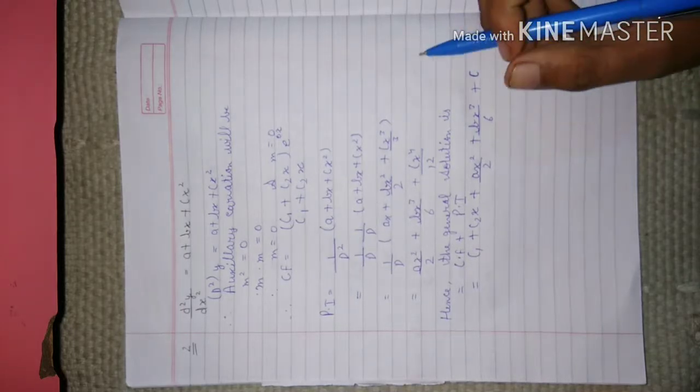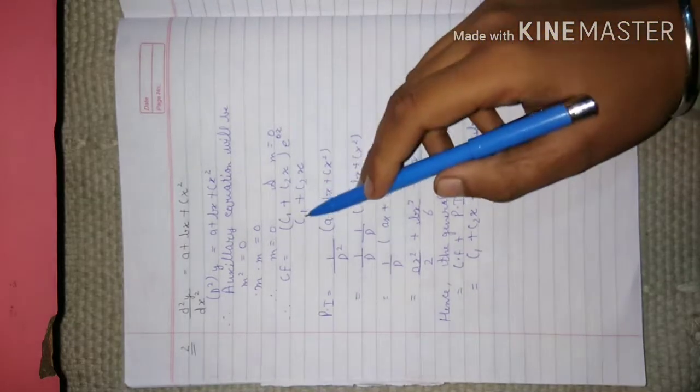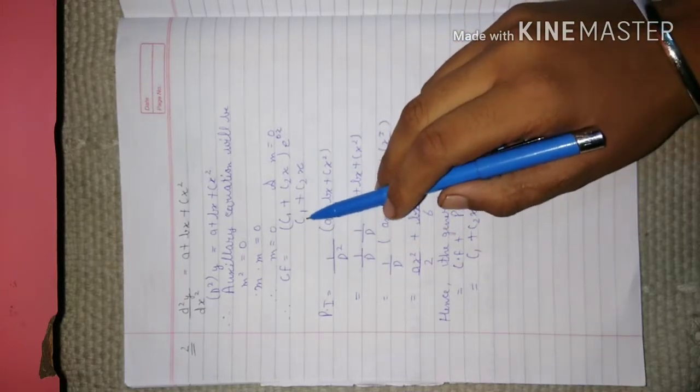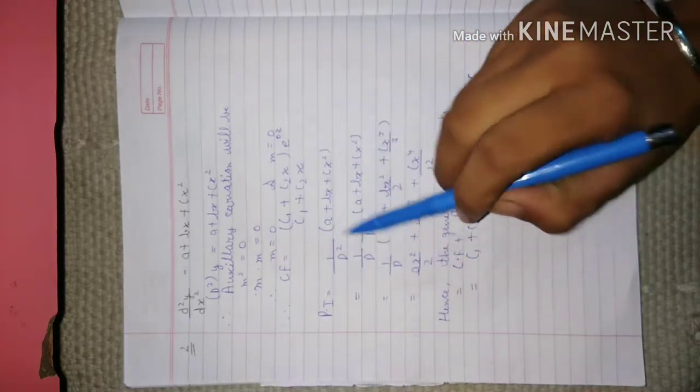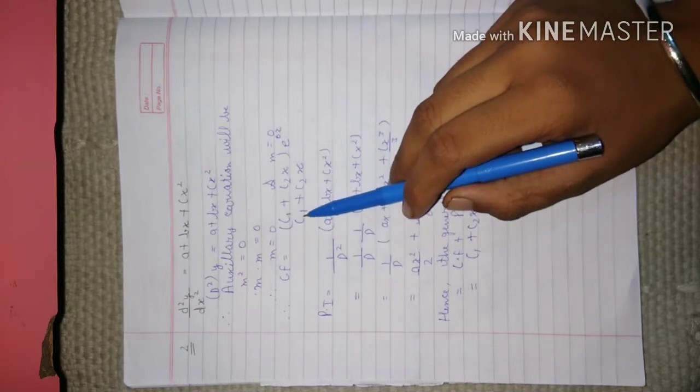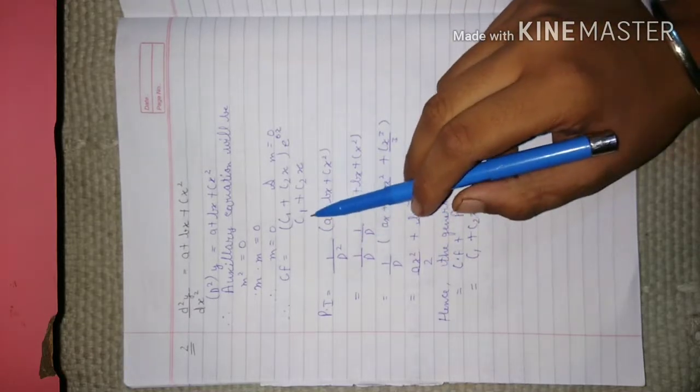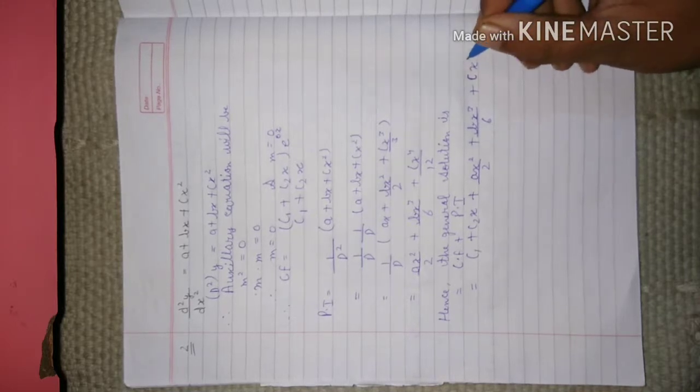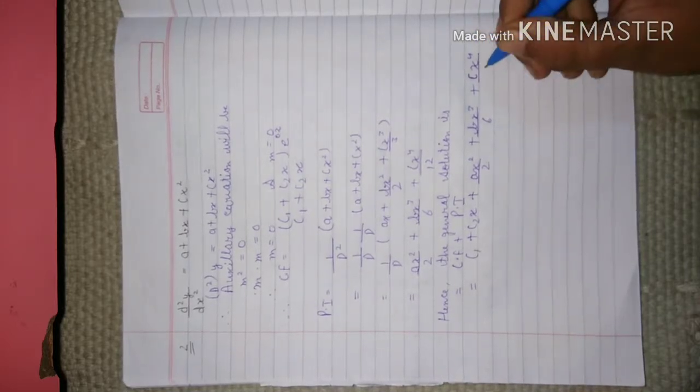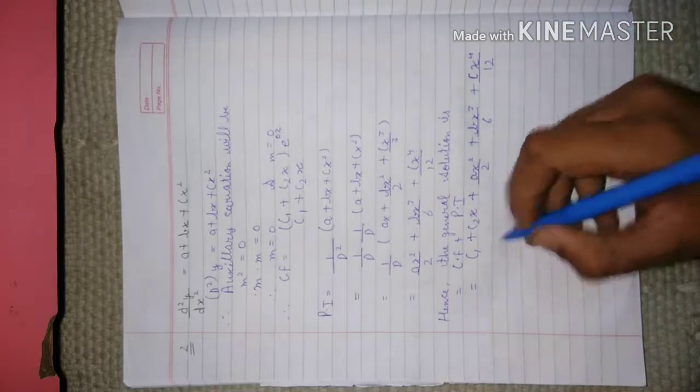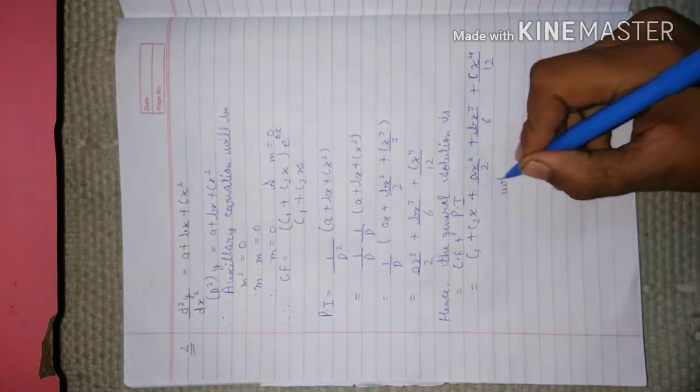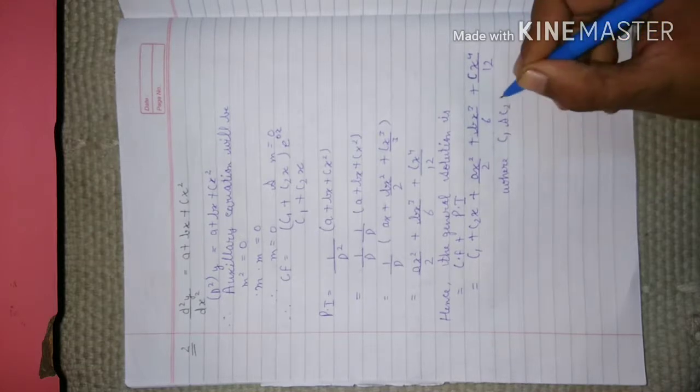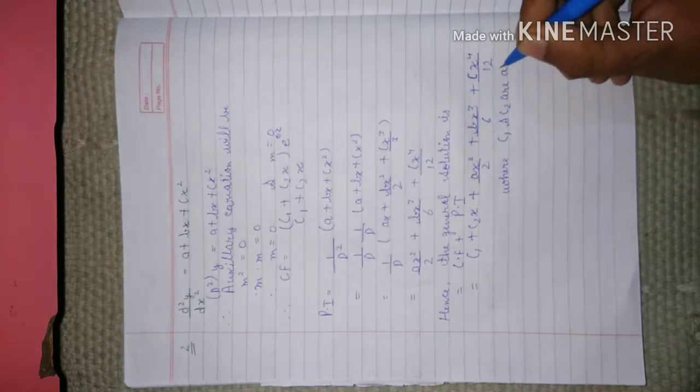Here we got one more problem: there is c in the equation, and we also consider the arbitrary constant as c. So we have to change this, or we can put a note. It will be more suitable where c1 and c2 are arbitrary constants.